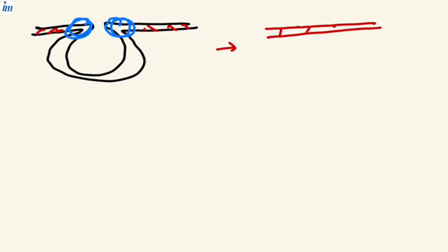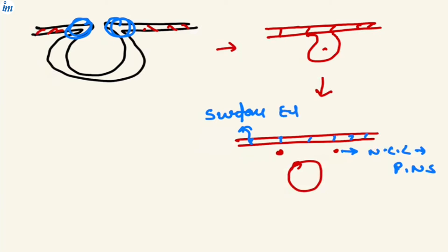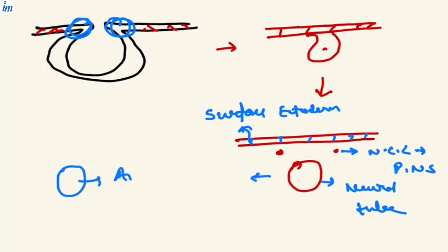This neural plate ectoderm forms the neural groove, and at last it forms the neural tube. The neural crest cells make up the PNS, and this is the surface ectoderm. Inside the neural tube we have amniotic fluid, and in the embryological process it forms the first CSF — the first cerebrospinal fluid.